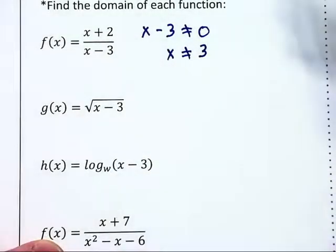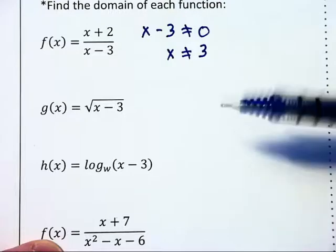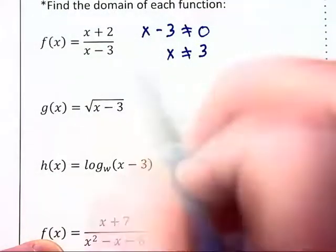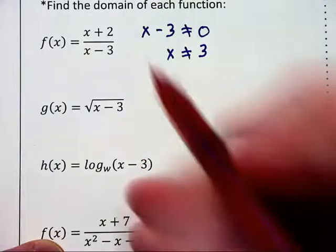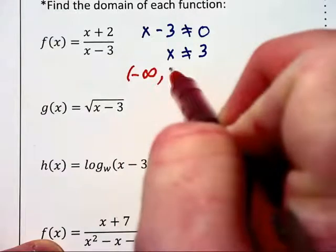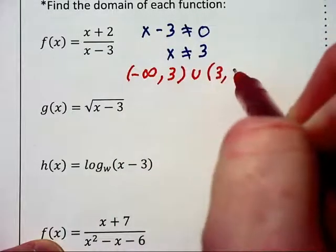When we write the domain, we don't want to state what values won't work. We want to know what values do satisfy the equation or function. So we're going to write the domain to be all numbers from negative infinity up to but not including 3 joined together with all the values that are greater than 3.